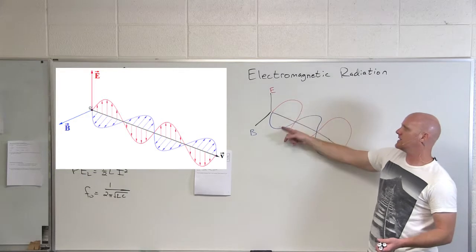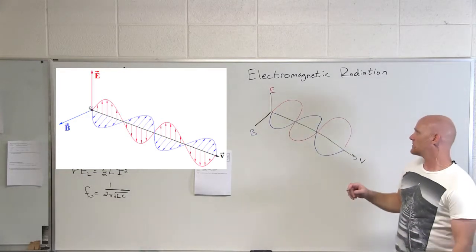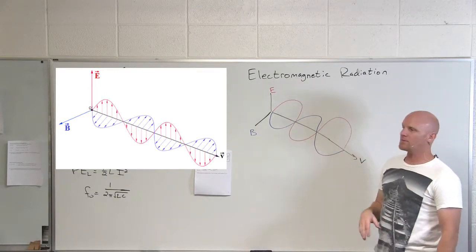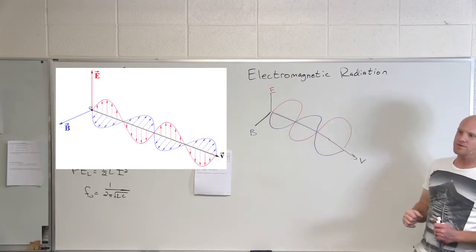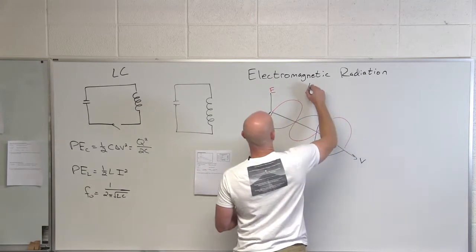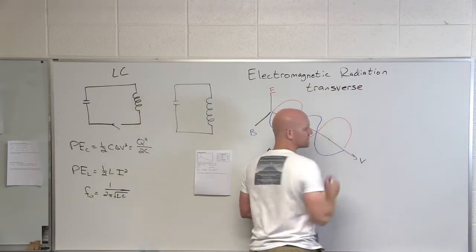The electric and magnetic fields are exactly in phase, reaching maximum at the same point, but they're totally perpendicular. The electric field in one plane, the magnetic field in a perpendicular plane. The propagation of the wave happens perpendicular to both of them. Because it's perpendicular to both, we refer to these as transverse waves as opposed to longitudinal waves.